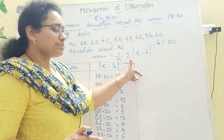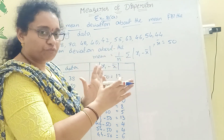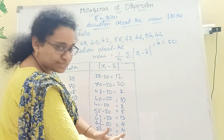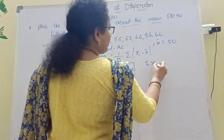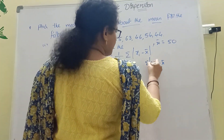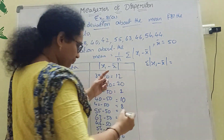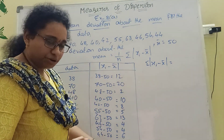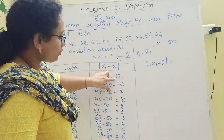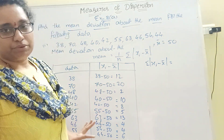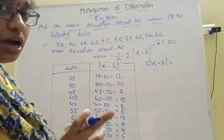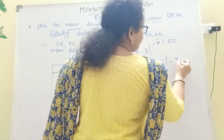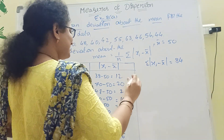Now, sigma means summation of those numbers — sum of |xi − X̄|. Add all these values: 12 + 20 + every value. I added them and got 84. You also add and verify: the answer is 84.